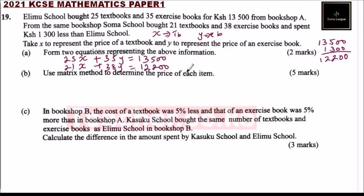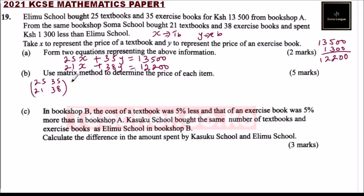Part b: use the matrix method to determine the price of each item. From the equations we can form the matrix. We have the coefficient matrix with entries 25, 35 on the first row and 21, 38 on the second row. We have the variable matrix x and y, and this equals the constants 13,500 and 12,200.